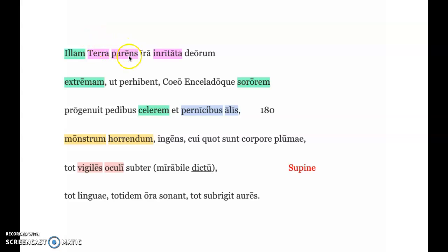So let's start with our subject up here, which is Terra parens, parent Earth or Mother Earth, having been provoked because of her anger towards the gods. This is an objective genitive, so you could say her anger of the gods. Now our verb is all the way down here, progenuit.